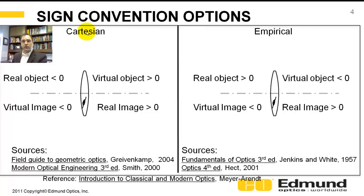In a Cartesian coordinate system, any objects to the left of the lens are negative and anything to the right of the lens is positive. It doesn't matter whether you're a virtual or a real object, the sign convention is set up based on geometry.